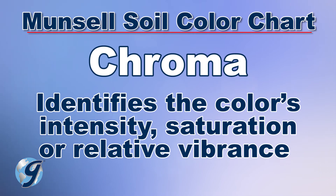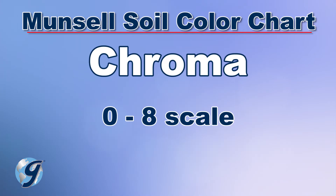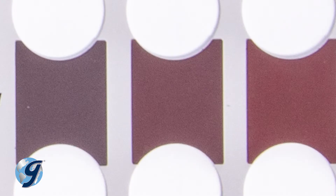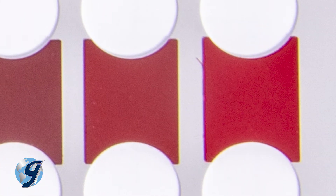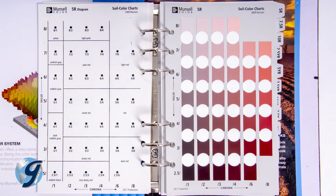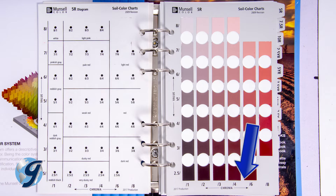Chroma represents the color's intensity, saturation, or relative vibrance on a scale from 0 to 8. 0 indicates that your soil sample has almost no color, and 8 indicates your soil sample has a very intense color. On your Munsell Soil Color Book page, the chroma numbers read from left, no color, to right, very vibrant color.